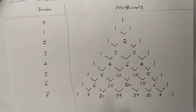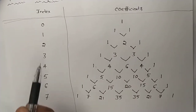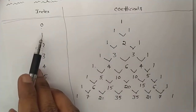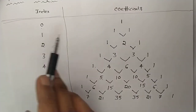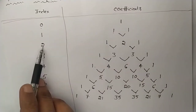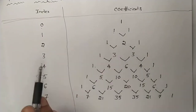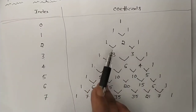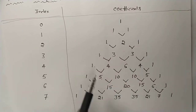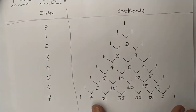This will be the coefficients. If the index is 0, coefficient is 1. If the index is 1, coefficients are 1, 1. If the index is 2, coefficients are 1, 2, 1. If the index is 3, coefficients are 1, 3, 3, 1. Like this, we write Pascal's triangle.